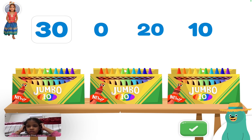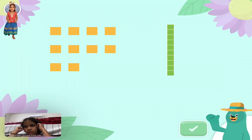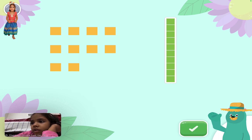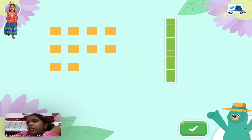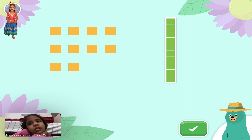Let's look at the other groups of ten. A rod is made up of ten blocks. Tap the rod. Awesome! You don't have to count each block in the rod. Each rod is made up of ten blocks.